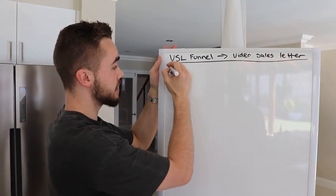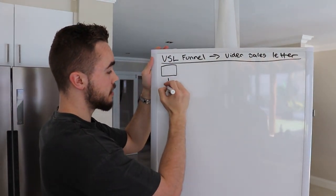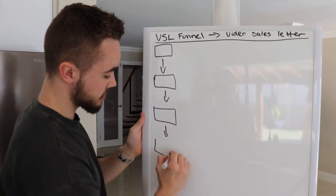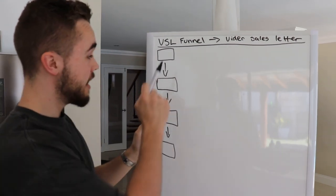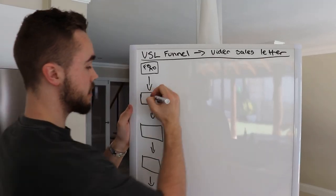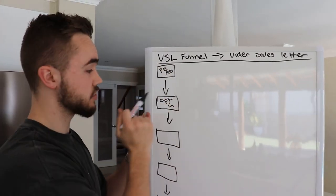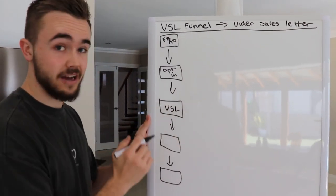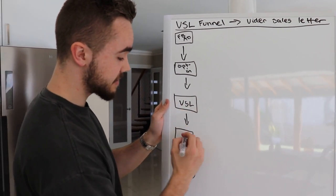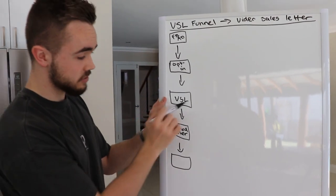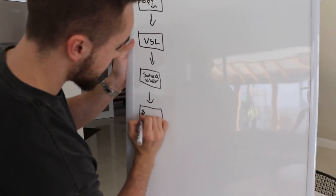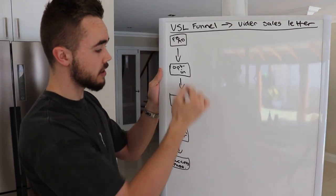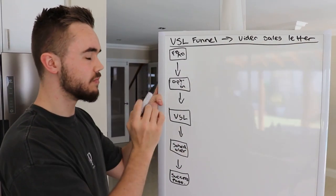The funnel has five steps: Facebook ad, opt-in page, VSL, scheduler, and a success page. The Facebook ad sends traffic to an opt-in page where they give their name and email. That opt-in then goes to the VSL itself. The VSL sends traffic to a scheduler, and the scheduler sends them to a success page. Each section looks simplistic but goes a lot deeper.